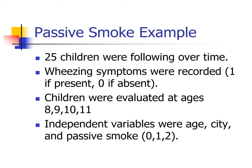Let's look at an example involving passive smoking — secondhand smoke. The study looked at 25 children, followed at ages 8, 9, 10, and 11. For each child at each age, they recorded yes or no: were wheezing symptoms present? The independent variables were age, city — two cities — and passive smoking coded as 0, 1, or 2, representing the number of parents that smoked at home.